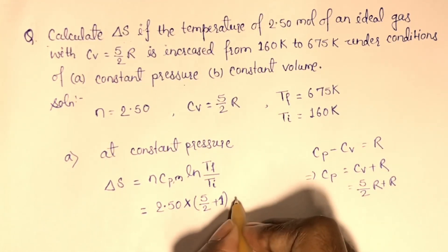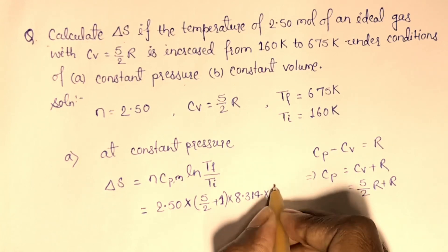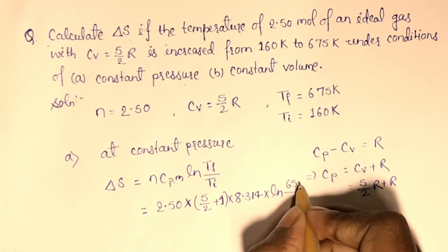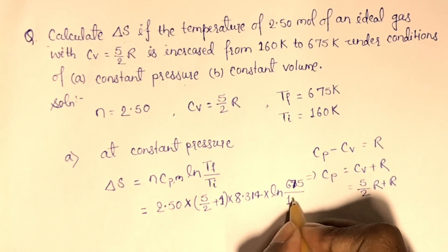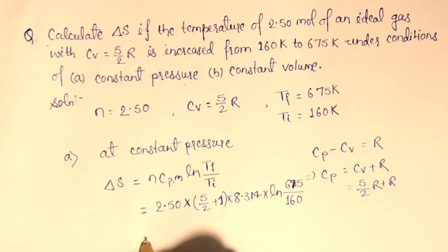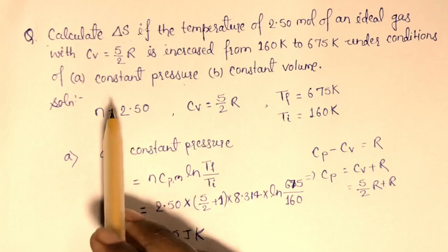R is the gas constant. Let's put the values: R is 8.314 into ln T final is 675 Kelvin. Here we will calculate, so T final is 675 and 160 T initial. When we calculate the values of this data, we will get 105 Joule per Kelvin. This is the value of entropy change at constant pressure.